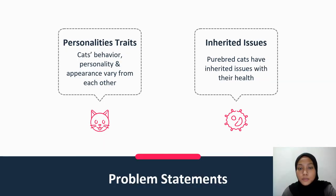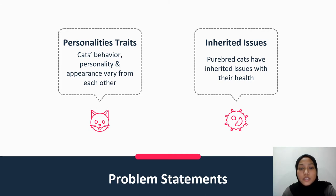Next, I will discuss the problem statement for this project. Cats' behaviour and appearances may vary from each other even within the same breed. Being able to classify cat breed can benefit owners to acknowledge their cat's behaviour and personality. Other than that, cats, especially purebred or pedigree cats, are known to have inherited issues with their health, especially cats which are born from inbreeding. In this case, classifying cat breed can help owners to take extra care for their cats.